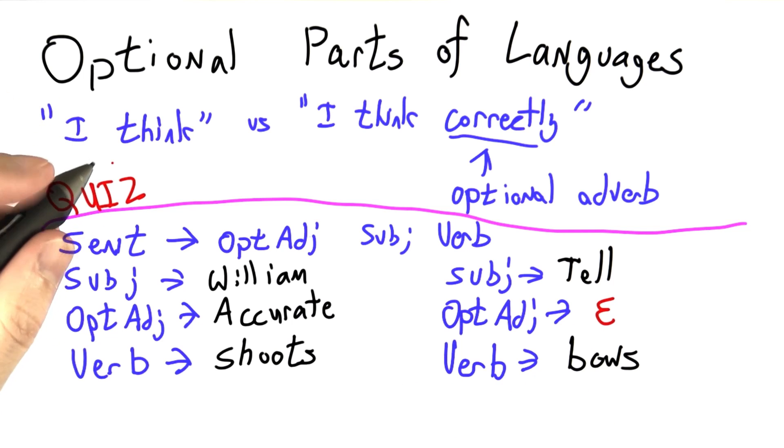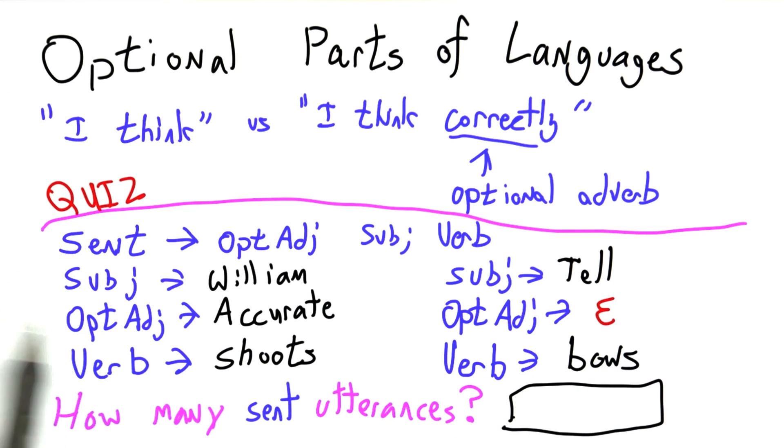So looking at this grammar, I have a quiz for you. Fill in the blank. Starting from sentence, how many valid utterances are there? How many strings can we make in this language? How many different things can this formal grammar produce?